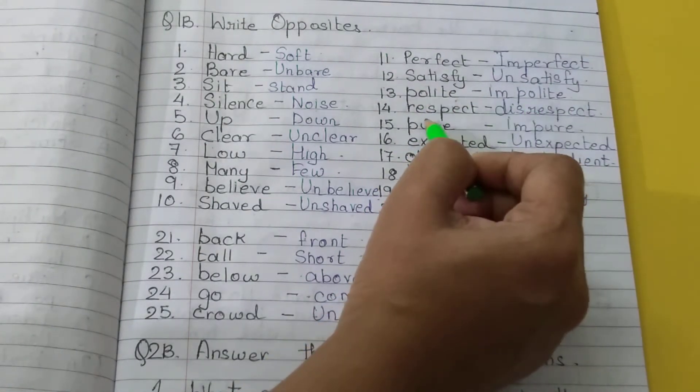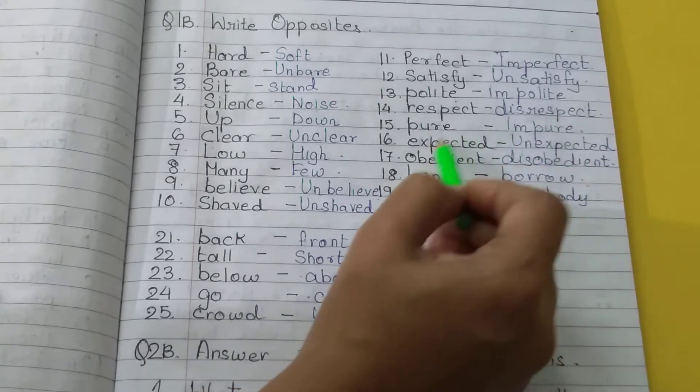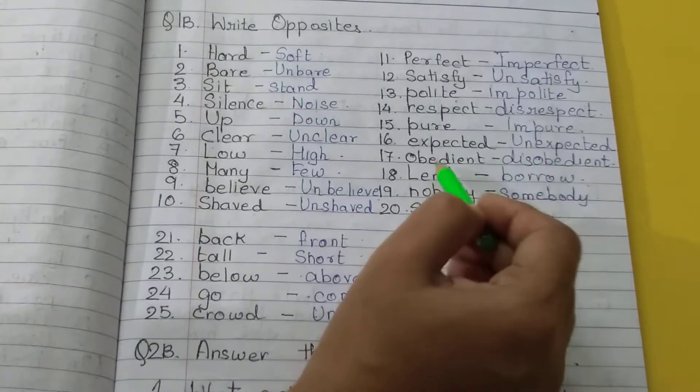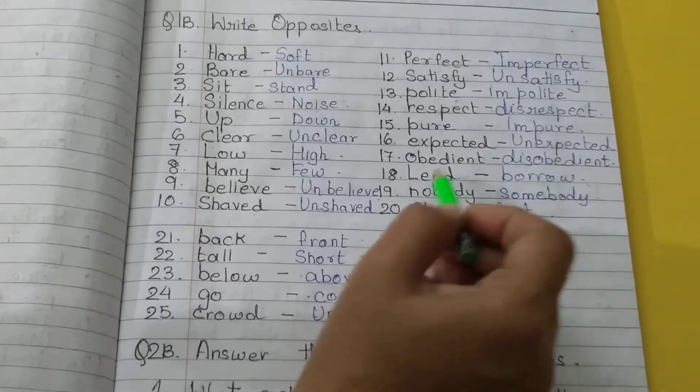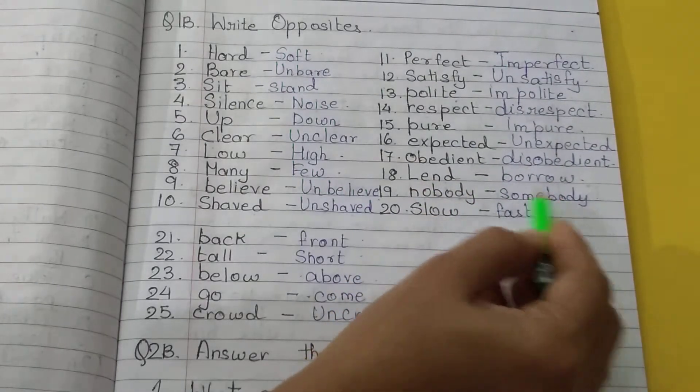Polite, impolite. Respect, disrespect. Pure, impure. Expected, unexpected. Obedient, disobedient. Land, borrow. Nobody, somebody.